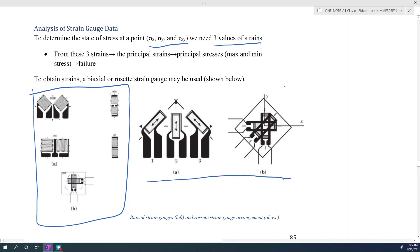For the strain gauge that's shown here, we have three strain gauges: one's at 90 degrees along the y-axis, one's along the x-axis, and one is at a 45-degree angle.